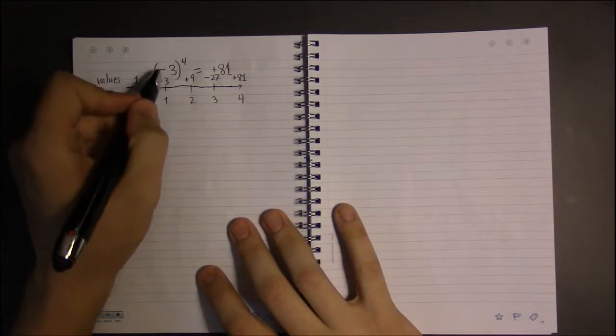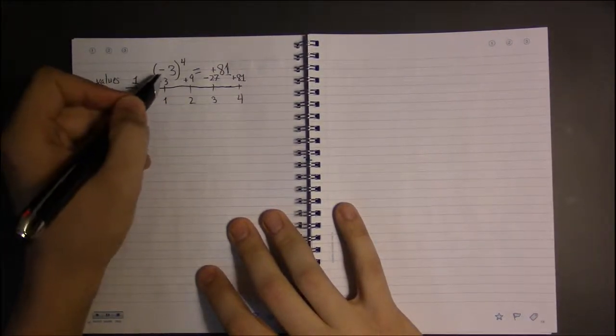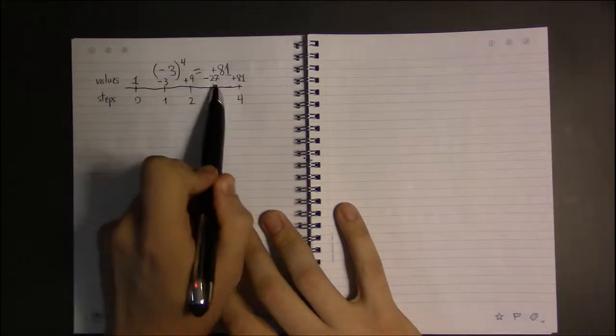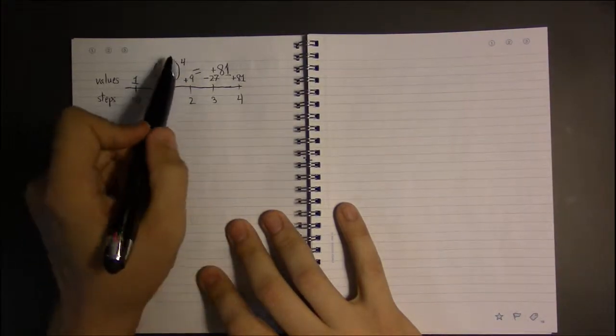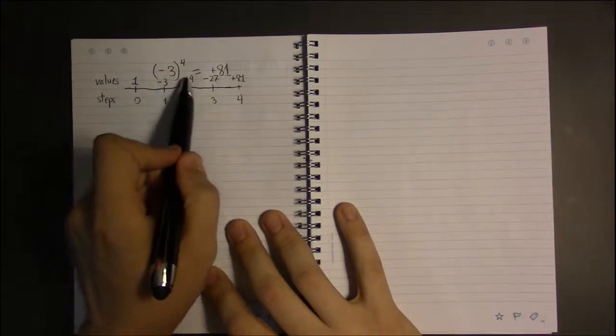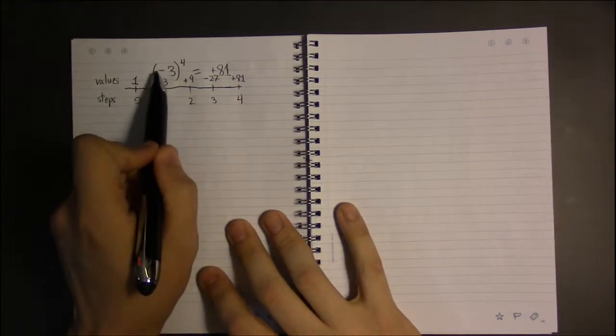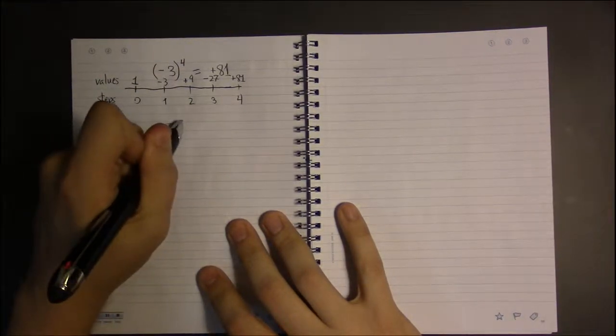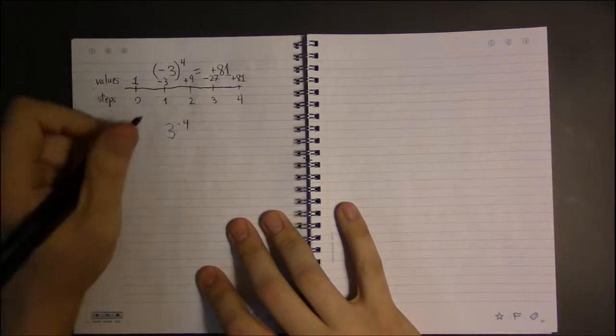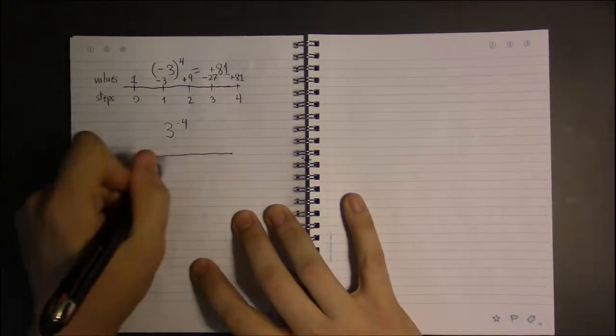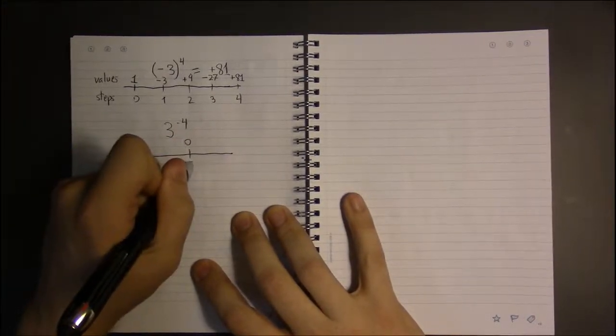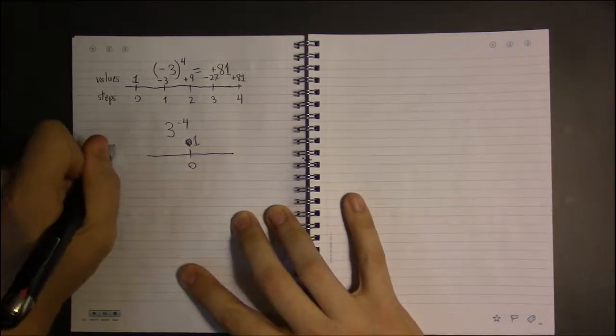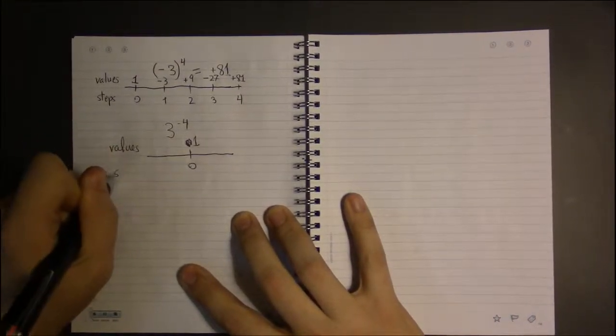So that takes care of a negative in the base, as we call it. The base is the number at the bottom. It's the number you multiply to get to the next step. And the exponent is the number of steps you take. So we dealt with a negative base. What happens if we have a negative exponent? Well, let's think about this. We're going to start at one. This is step zero. So we've got our values and our steps.